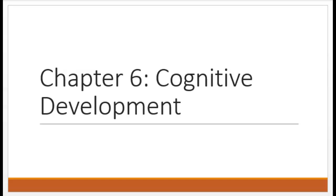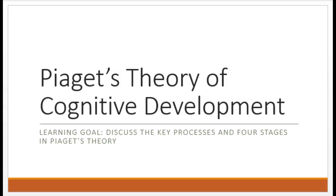Chapter 6: Cognitive Development. We're going to discuss the key processes and the four stages in Piaget's theory of cognitive development.